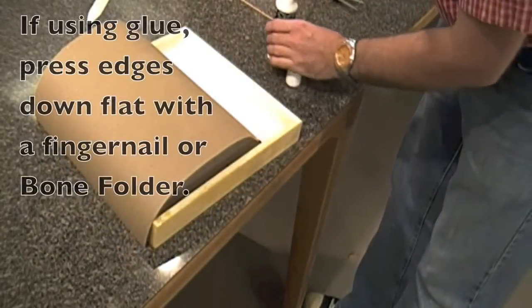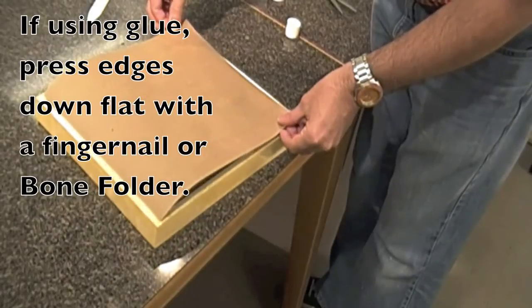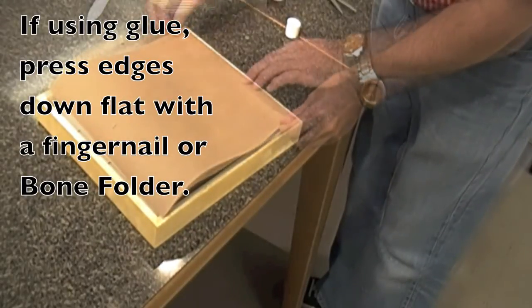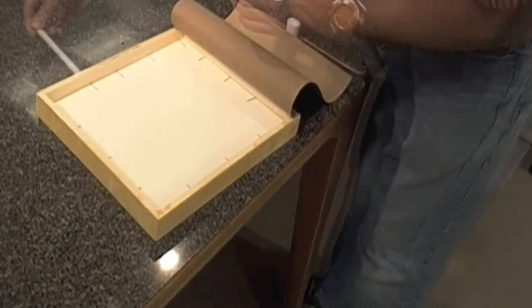I cut it a little less than the size of the frame. And then it can get glued down either using like a double stick tape or I use just a white glue, kind of doing one side at a time.